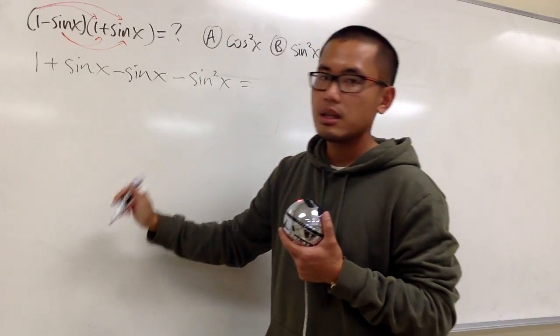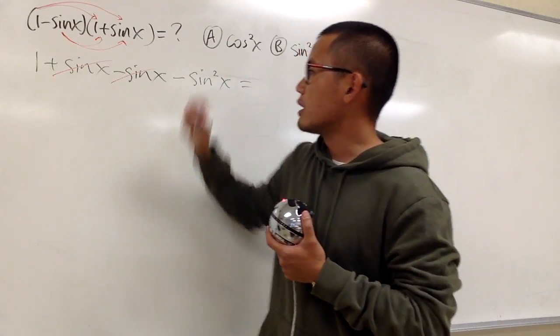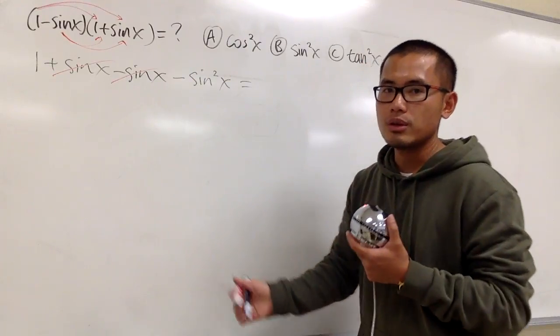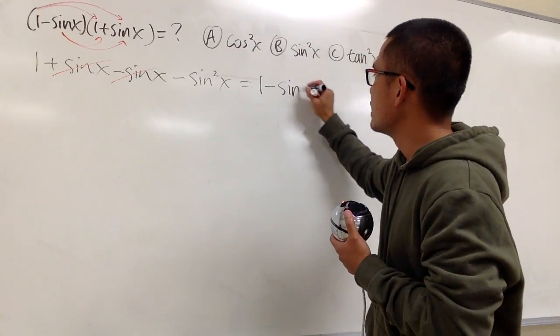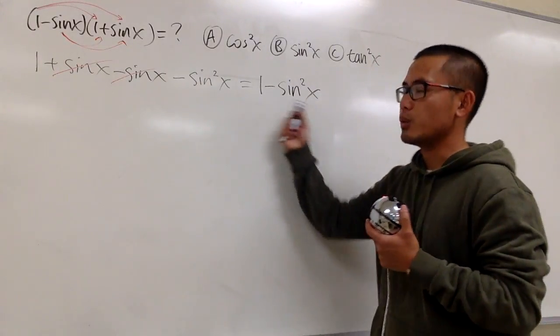And as you can see, this and that cancel out. Sin x minus sin x is just 0. So in other words, we have 1 minus sin squared x. That's all we have.